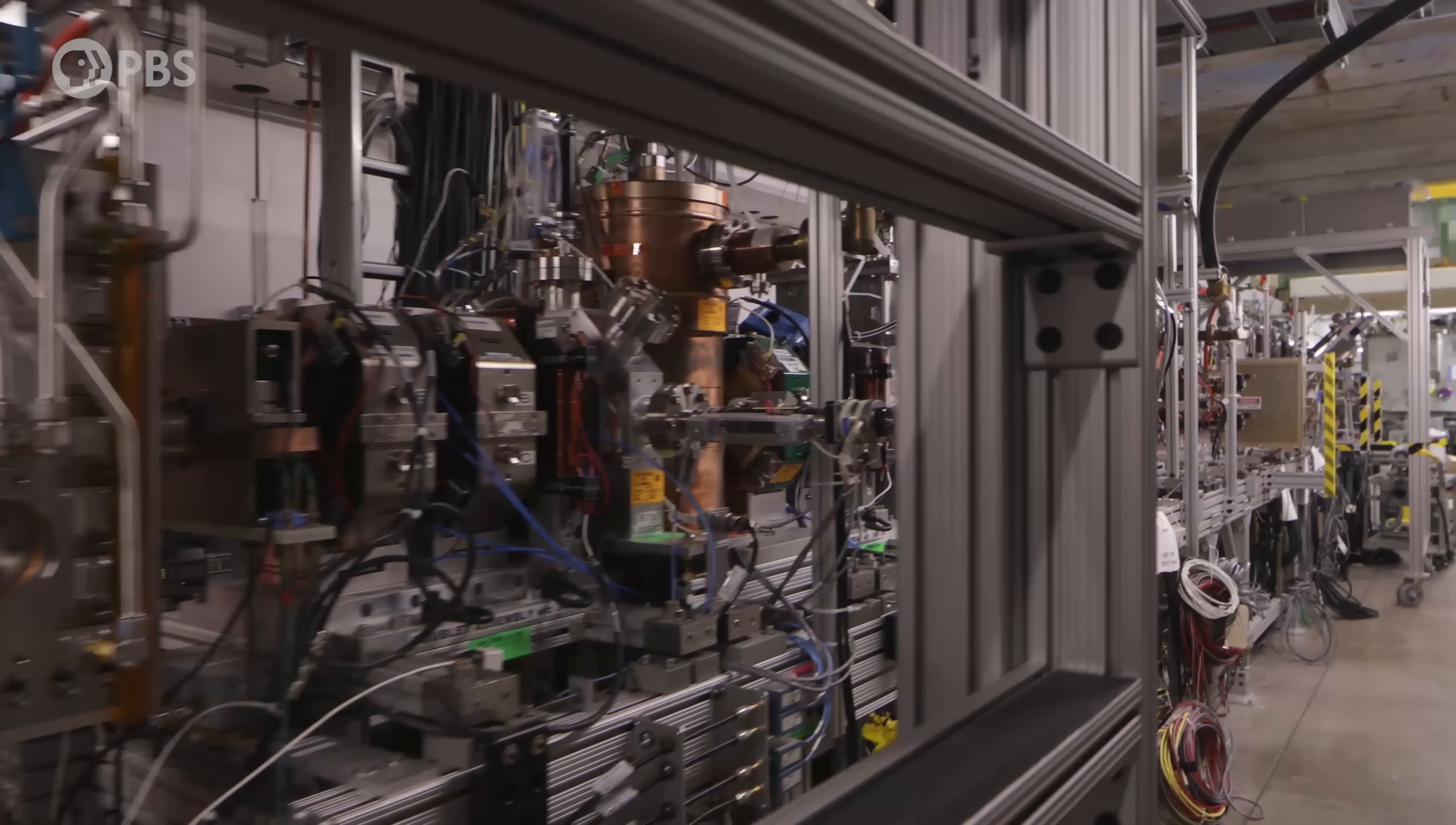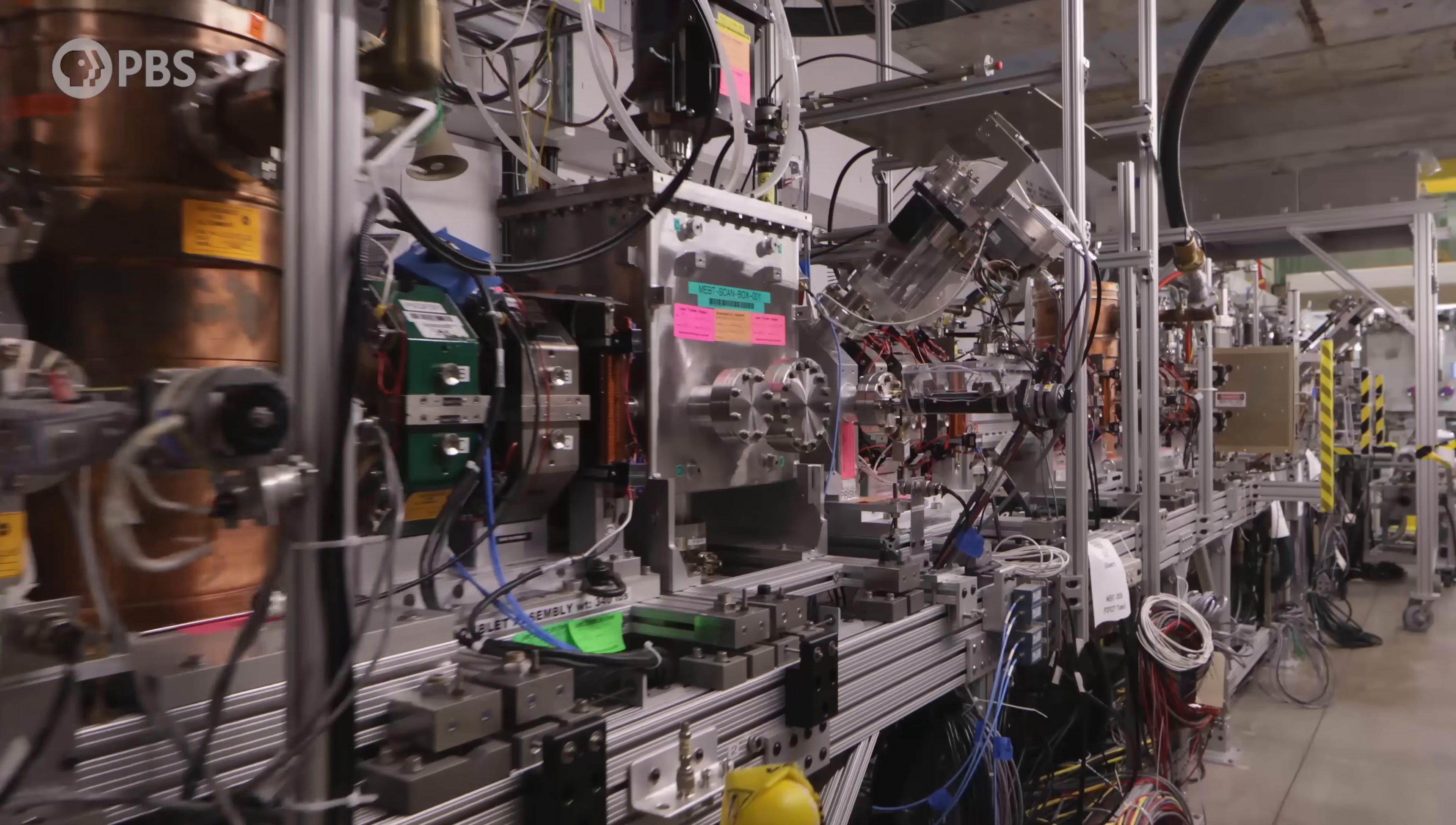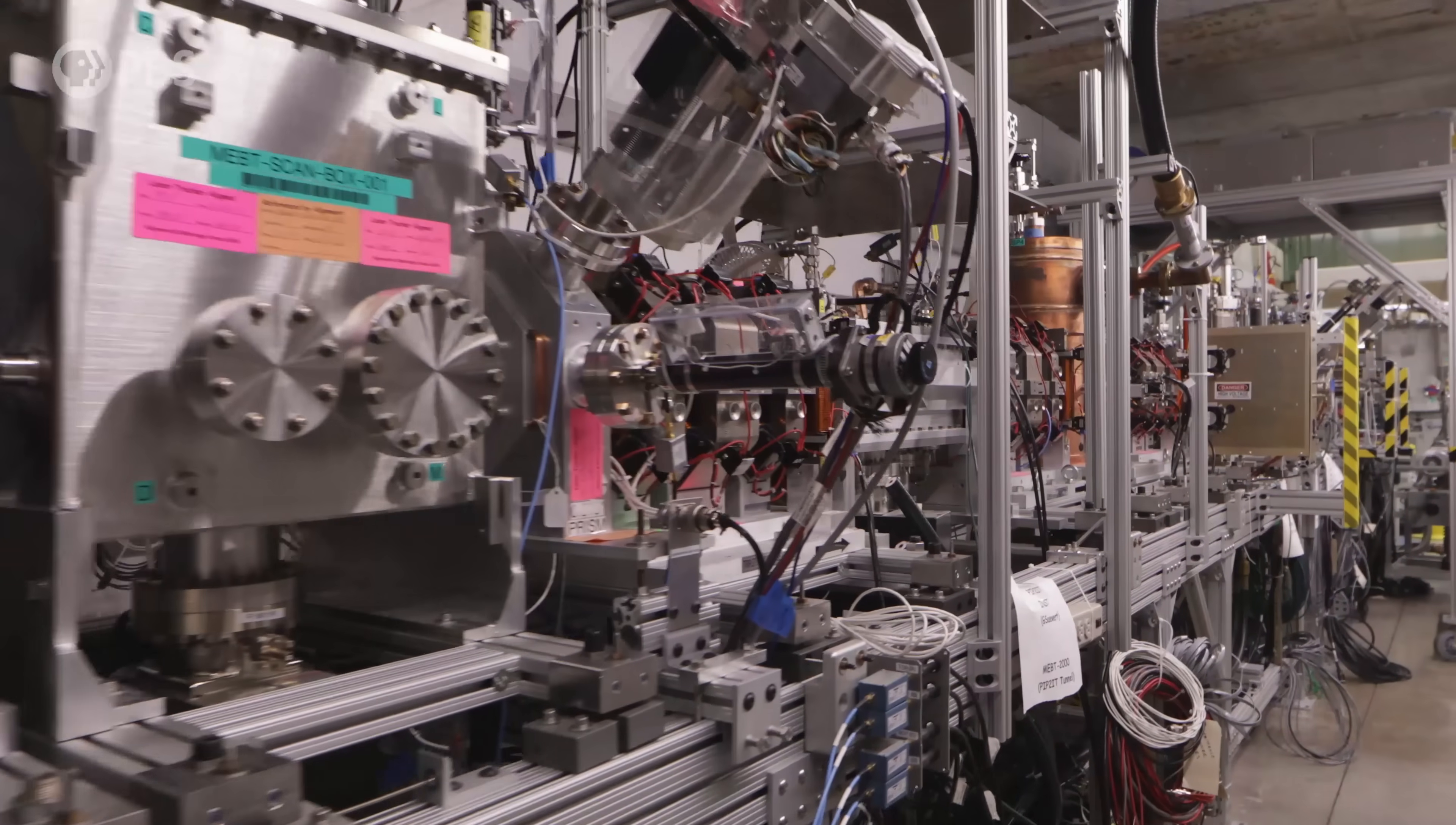We are standing in front of the injection test accelerator for PIP2, that's the proton improvement plan 2, which is going to massively increase the number of neutrinos that Fermilab will be able to send to the DUNE experiment. Don, I think you need to tell us a bit about how DUNE is actually going to work.